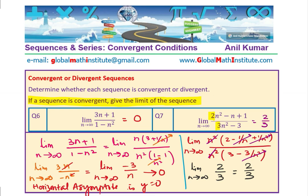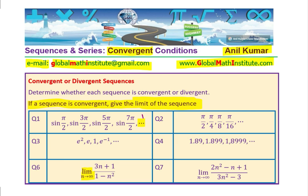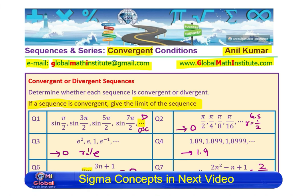To summarize: example 1 is divergent because it oscillates. Example 2 is a geometric sequence with r = 1/2 and approaches 0. Example 3 approaches 0 with r = 1/e. Example 4 approaches 1.9. Example 5 has a limit of 0 and example 6 has a limit of 2/3. Wherever we found those limits, they are all convergent.